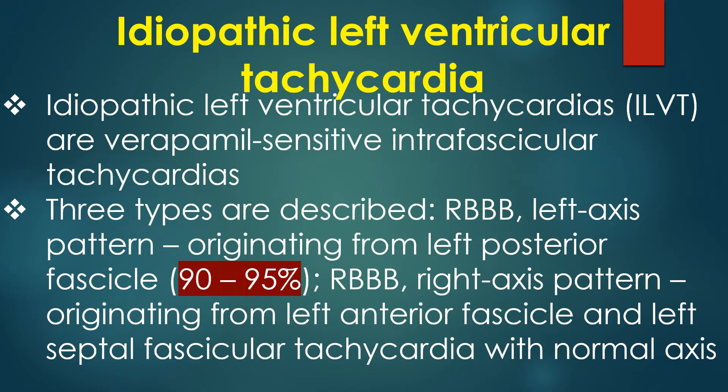Idiopathic left ventricular tachycardias are verapamil-sensitive fascicular tachycardias. Three types are described: RBBB left axis pattern originating from the left posterior fascicle, RBBB right axis pattern originating from the left anterior fascicle, and left fascicular tachycardia with normal axis.